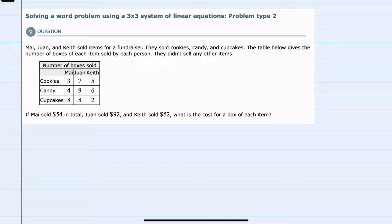In this example, we see that May, Juan, and Keith sold items for a fundraiser. They sold cookies, candy, and cupcakes. We're given a table to see the number of boxes that each one sold. And then in the final sentence, we're given the total that each one of them sold, and we're asked to find the cost for each box.